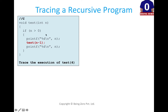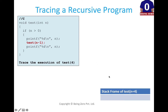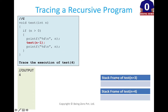Let's trace the output. When we call this function with test(4), a stack frame gets created with n equal to 4. Since n is 4, we go to the first line: if n is greater than 0, we print the value of n. So the output will be 4. Then a recursive call is made, and the moment that happens, another stack frame gets created.